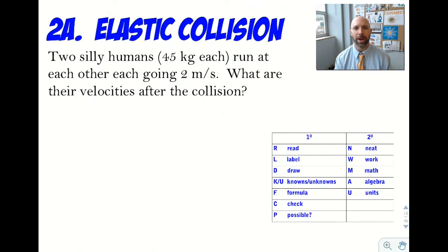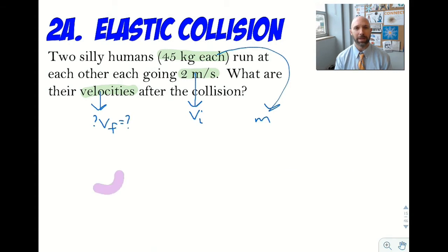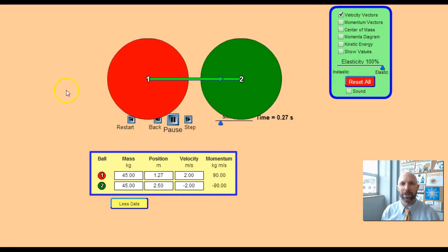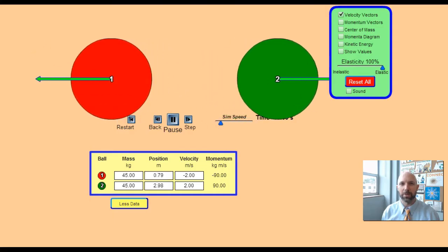Problem 2a. Again keep in mind your problem solving strategies. We're labeling two silly humans, 45 kilograms each. They're going the same velocities. We can label those and see what's going to happen in this problem. Starting to draw it here. Same size, different colors. And this is what that collision looks like in a computer simulation.